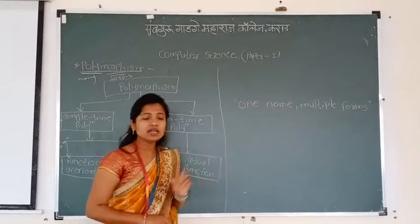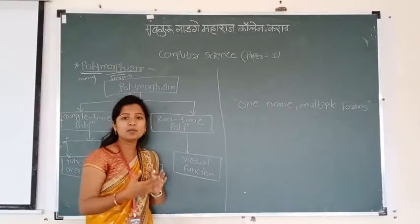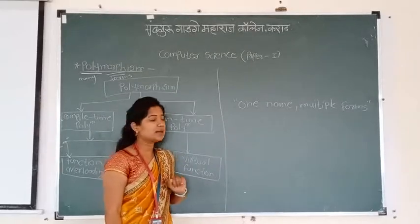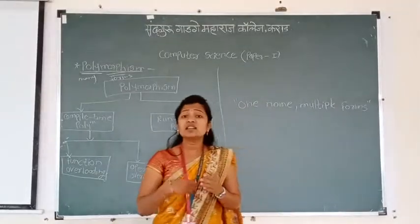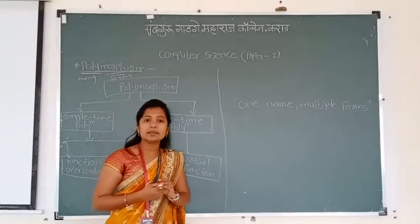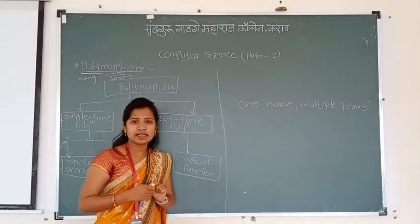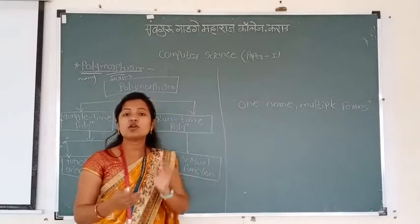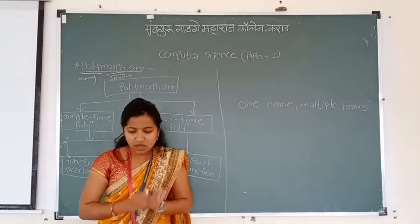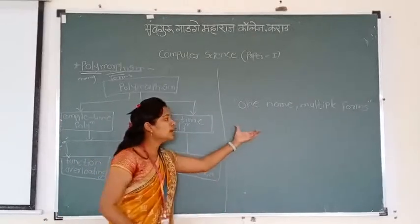One name, multiple forms — just like a mobile phone is one device but performs different tasks, similarly in polymorphism we use one name for multiple purposes. It allows a single name to be used for more than one related purpose. Polymorphism refers to identically named methods — member functions — that have different behavior depending on the type of object they refer to.